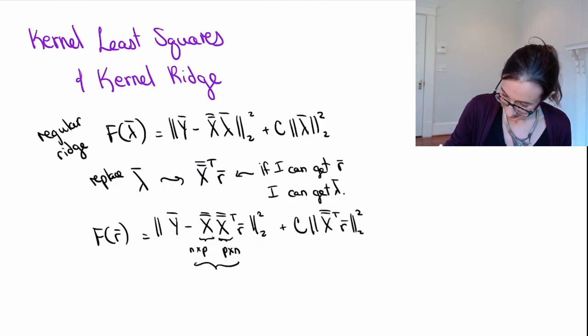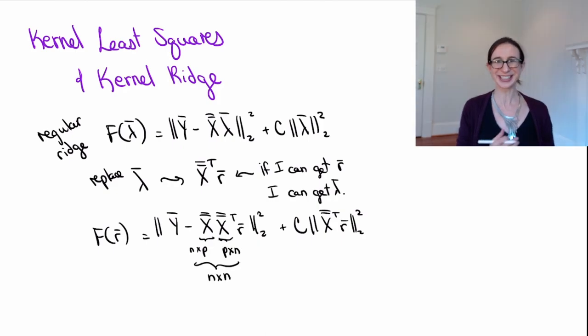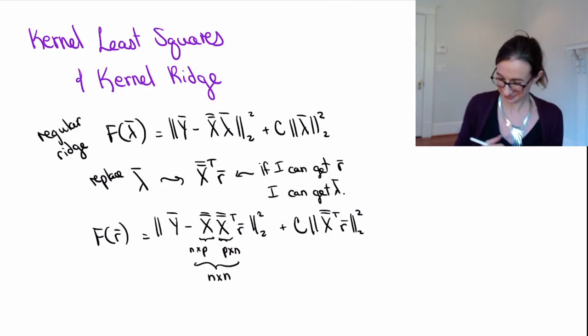And that means X transpose must be p by n. And so this is n by n. So now hopefully you can see that this is actually a gram matrix, the kernel matrix. So we've kernelized it. Now we can simply replace it with another kernel, another gram matrix from another inner product. As long as it's a valid kernel, we're good.